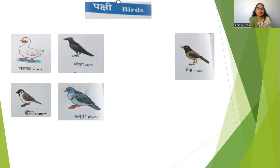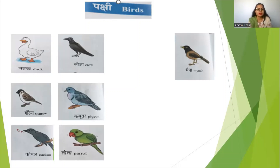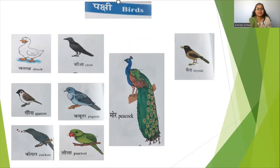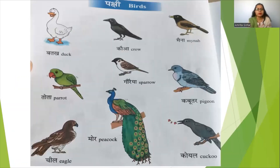Kabutar means pigeon. Koyal means cuckoo. Parrot in Hindi is called Tota. Next we have the national bird — Moor means peacock. Then we have Cheel — Cheel means eagle.